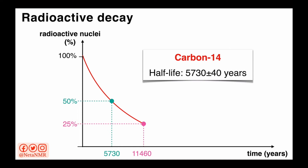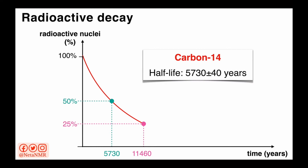If we wait another half-life after that — so after about 11,460 years — the number of radioactive nuclei decreases to half of the previous amount, which is now a quarter of the initial amount. This process keeps on going, and after every new half-life, the amount of radioactive carbon-14 nuclei decreases to half of the previous amount. By knowing this and by looking at the ratio of carbon-14 to carbon-12 in a sample, we can find out the age of a sample, up to an age limit of about 50,000 years, when the amount of carbon-14 becomes too small to be measured.